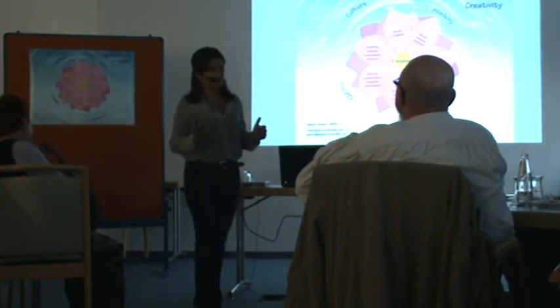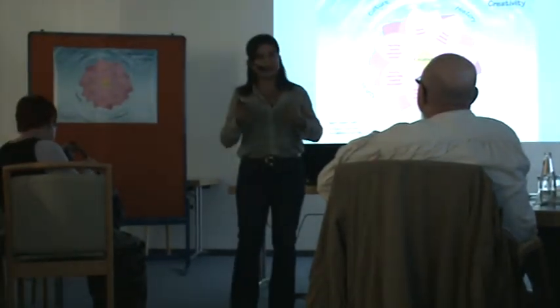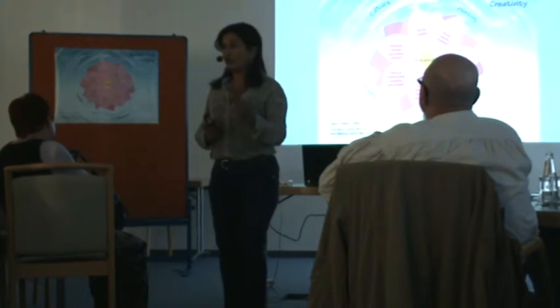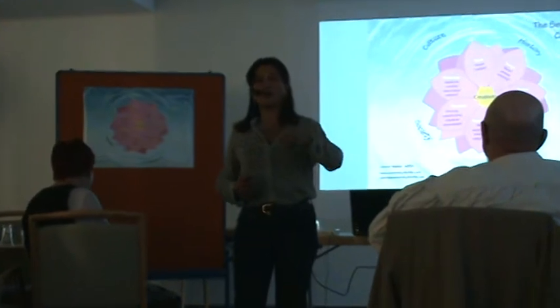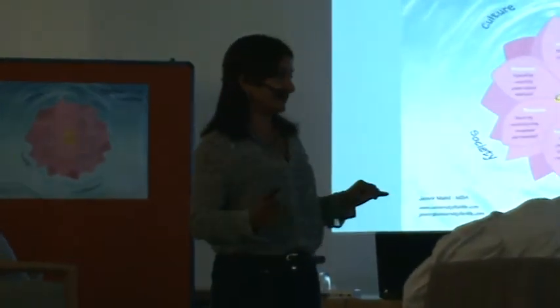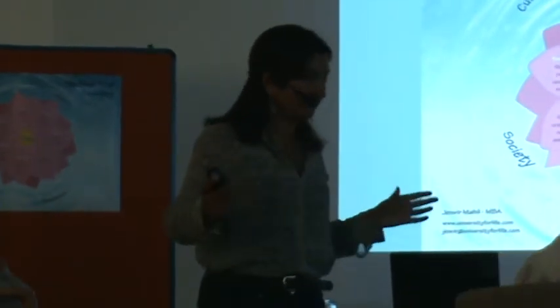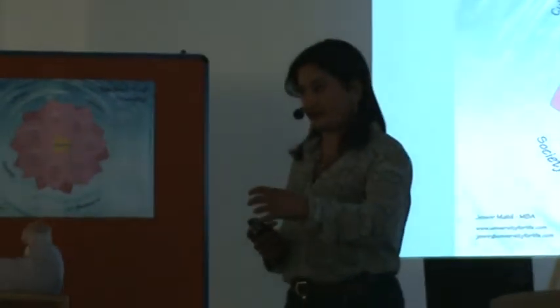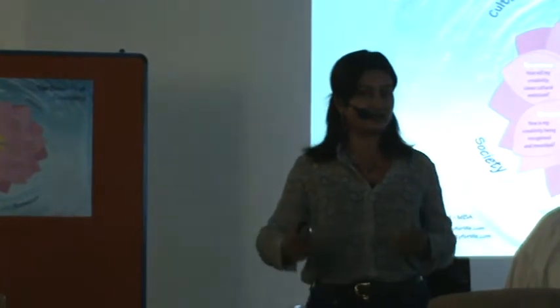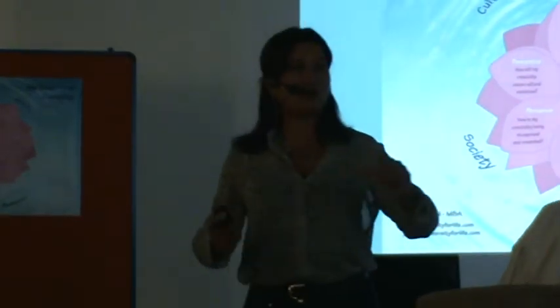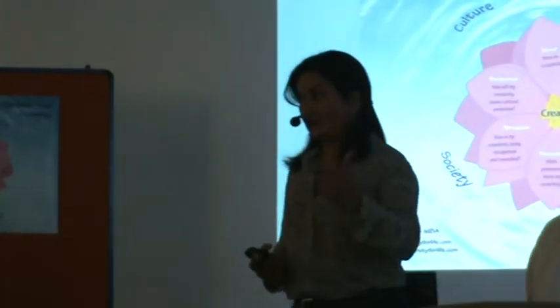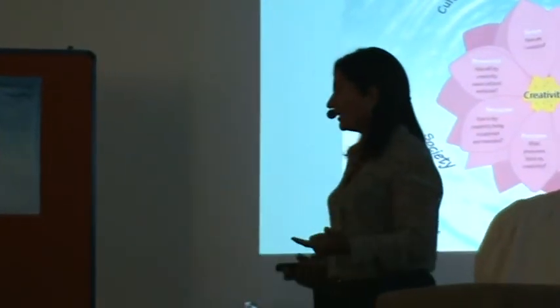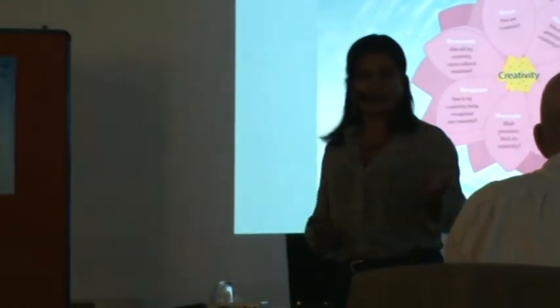To summarise: creativity occurs in a context of society, culture and history. The creative person is only one aspect of creativity, and it's the interaction of persuasion, place and various other factors that contribute to creativity that will stand the test of time. And thirdly, there are at least four stages in the process of creativity: preparation, incubation, illumination and verification.